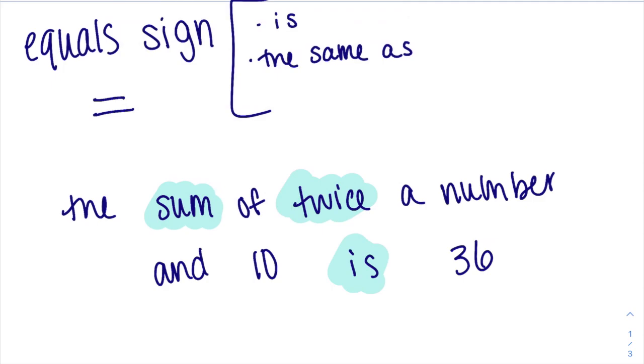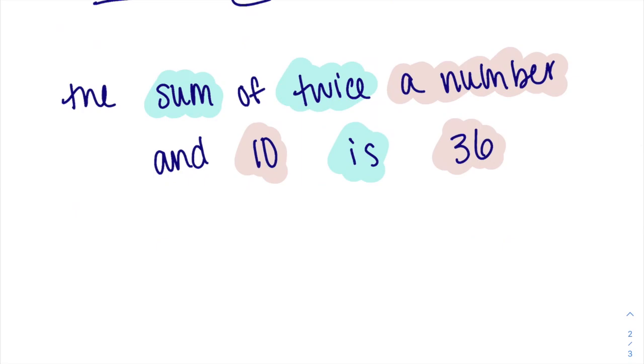So right here it says a number, which refers to x, 10, and 36. So some place in this entire thing, I'm going to have an x, a 10, and a 36. And now I just have to figure out how all of those things relate to each other.